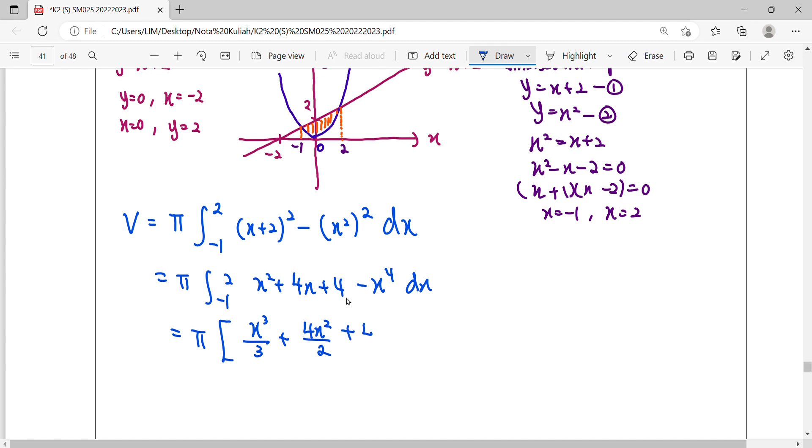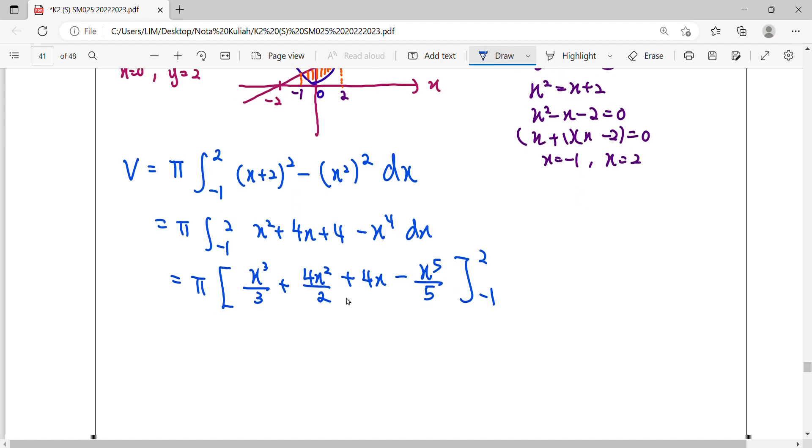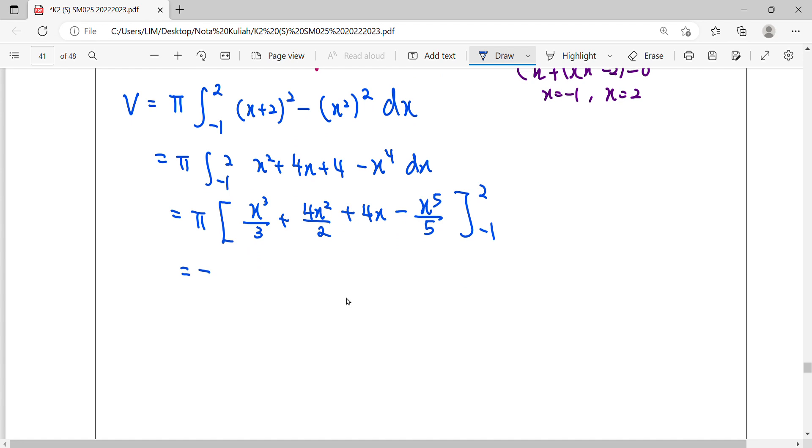Integral constant we get 4x here, power plus 1 over new power, upper limit 2, lower limit -1. So the last step here we're going to perform: substitute upper limit minus lower limit.